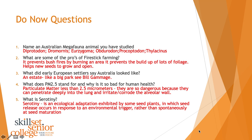Question three: what did early European settlers say Australia looked like? They said it looked like an estate in Scotland — basically a very well-maintained area of land, like a big park. Really immaculate-looking land that appeared to have been well managed. We looked at an author called Bill Gammage who has done a lot of work in this area. PM 2.5 stands for particulate matter less than 2.5 micrometres. They're dangerous because they can penetrate deeply into the lung and irritate or corrode the alveolar wall — the alveoli are the little air sacs in your lung that help you breathe.